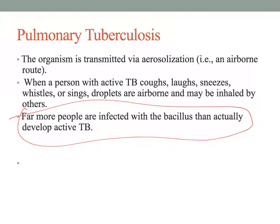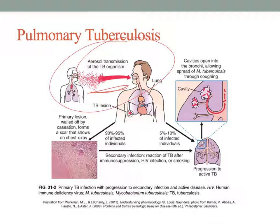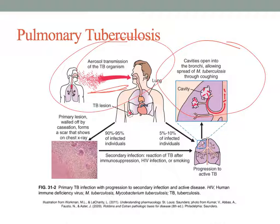The TB skin test is a screening tool to determine if people have had an exposure and if they are at risk for spreading the disease, since TB is highly communicable. This slide visually shows transmission occurring through airborne droplets. The bacteria gets into someone's lung, and the body can usually encapsulate it through macrophages so it never becomes active.